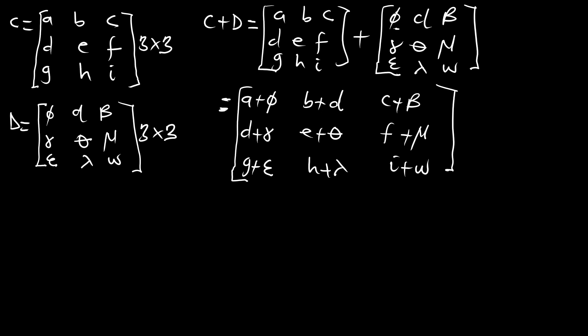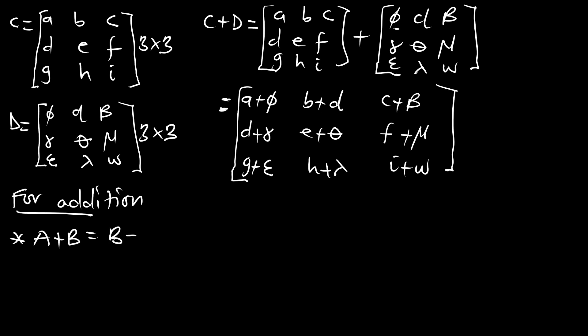For addition of matrices, some properties are true. Addition of A plus B is equal to B plus A for matrix addition — this is true, meaning matrix addition is commutative.